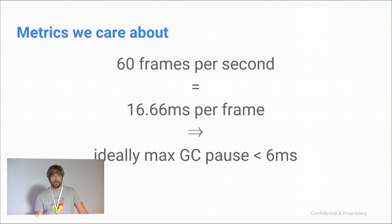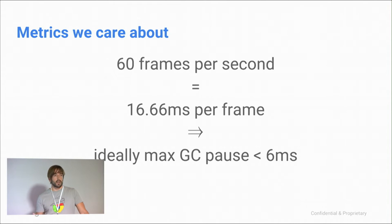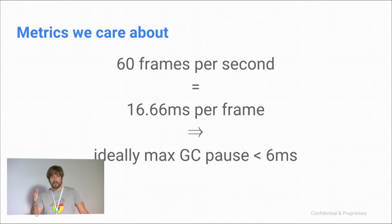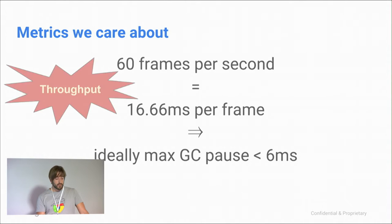Let's start with the trade-off space. What we really care about is providing 60 frames per second, which means each frame has 16.66 milliseconds to get all the work done. Ideally, we don't have any garbage collection pauses during these frames, but we feel that if pauses are below six milliseconds, in most cases we do fine. Ideally it would be zero. So to get there, JavaScript has to execute really fast.